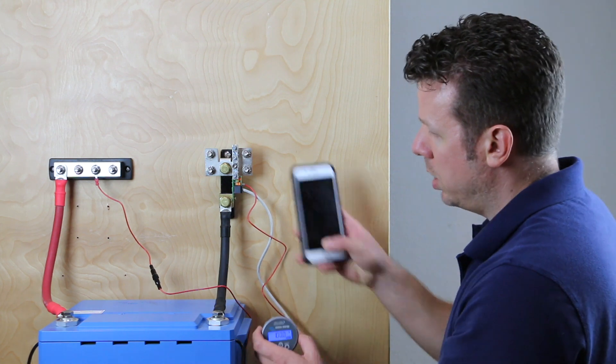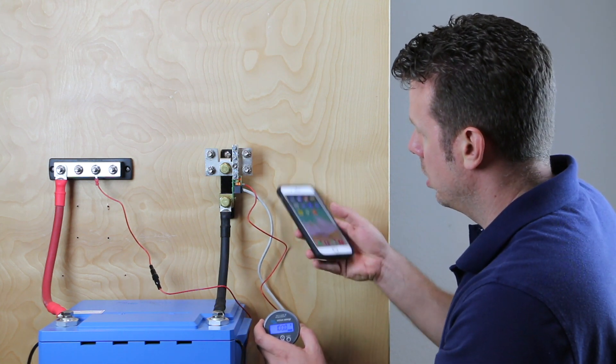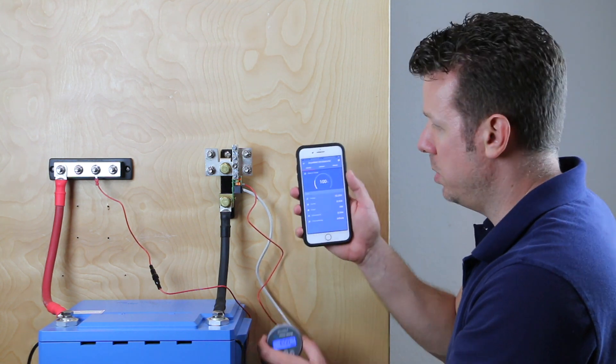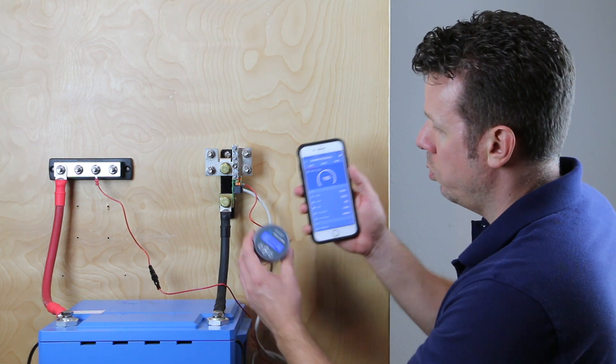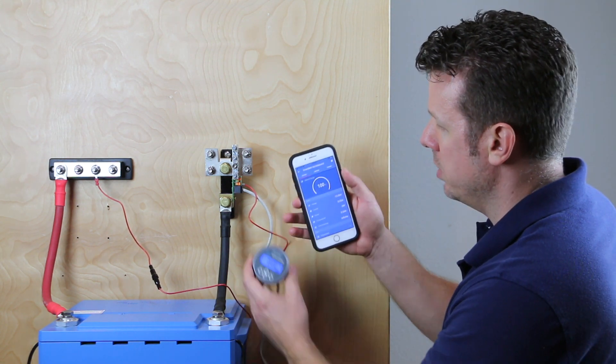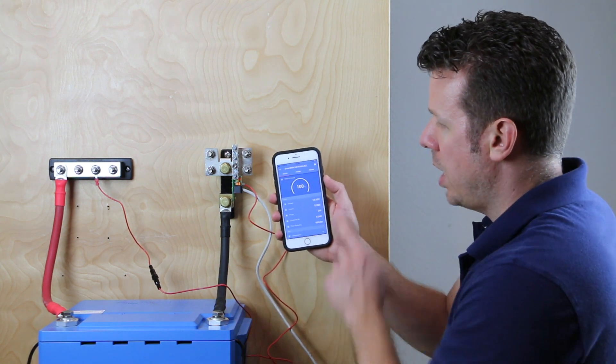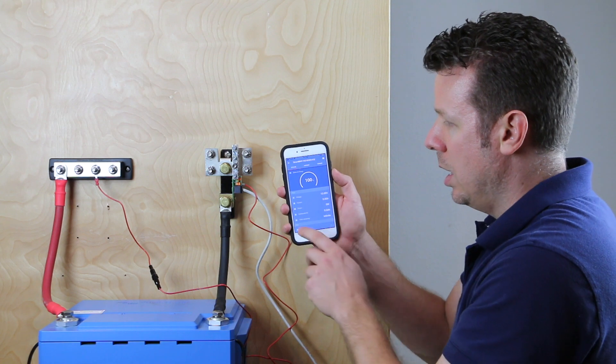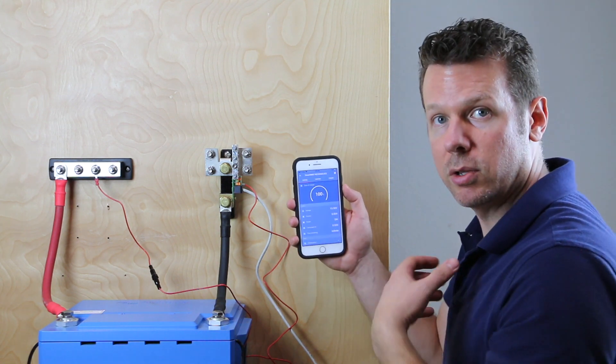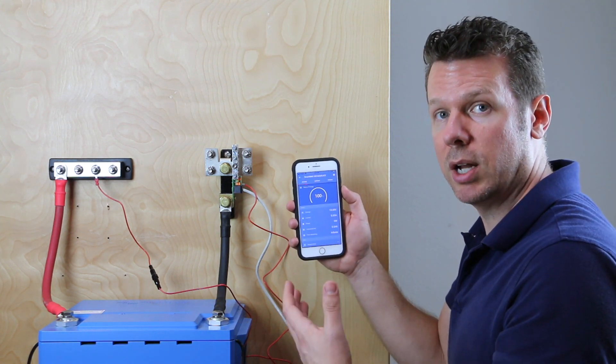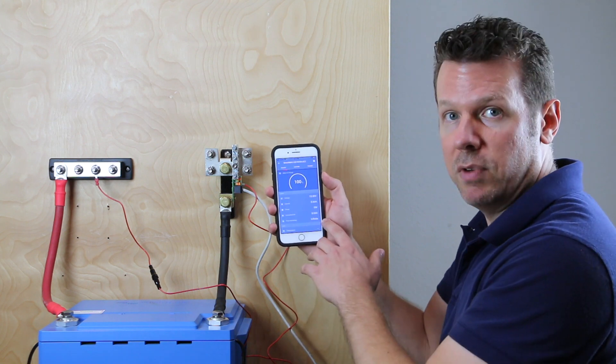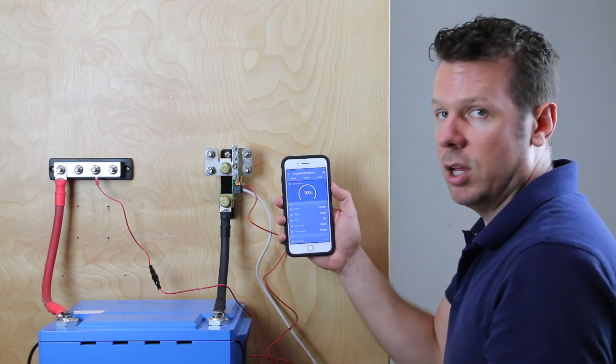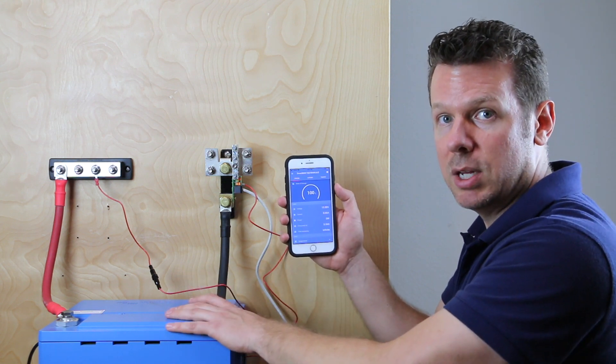So this is also putting out the Bluetooth signal. So I'm going to pull up the app and we should be able to pick up the data. So we're now pulling data from this device into the app and we have all the same numbers, 13 volts, zero amps, zero watts. And then we have time remaining. So this is that time to empty feature that I told you about and it says infinite. Because nothing's moving, there's no loads or chargers, it's an infinite amount of time until the battery is empty.